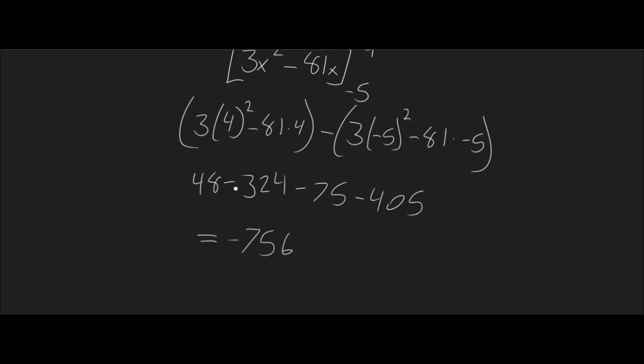So, I finished the calculation here. So, 3 times 4 squared is 48 minus 81 times 4 is 324 minus 3 times 5 to the power of 2, 75 minus 81 times negative 5 is 405. And when you simplify this, you get minus 756. And this is going to be, if you're looking for the volume, it's going to be units cubed, because it's volume.